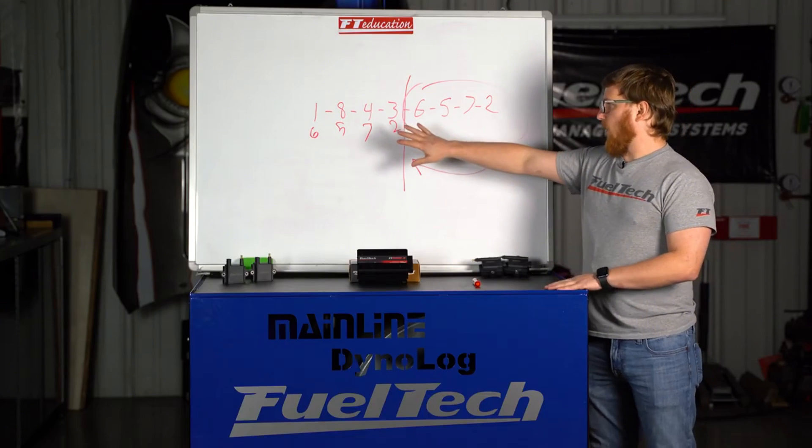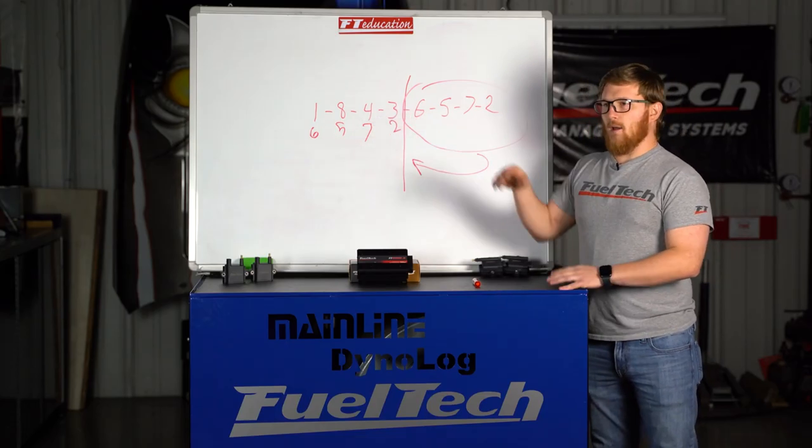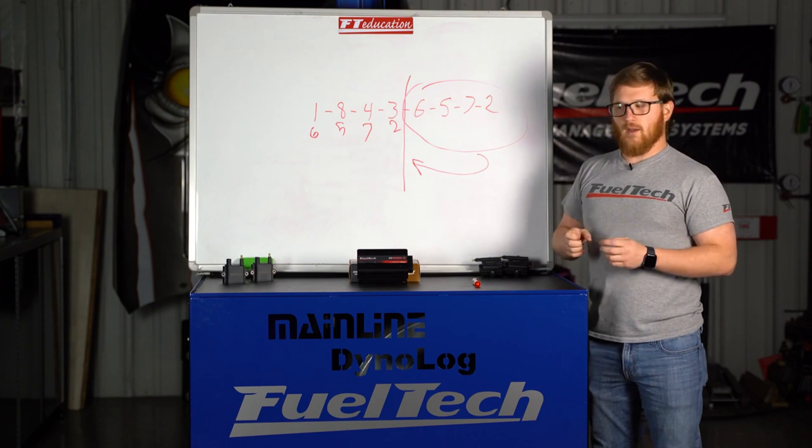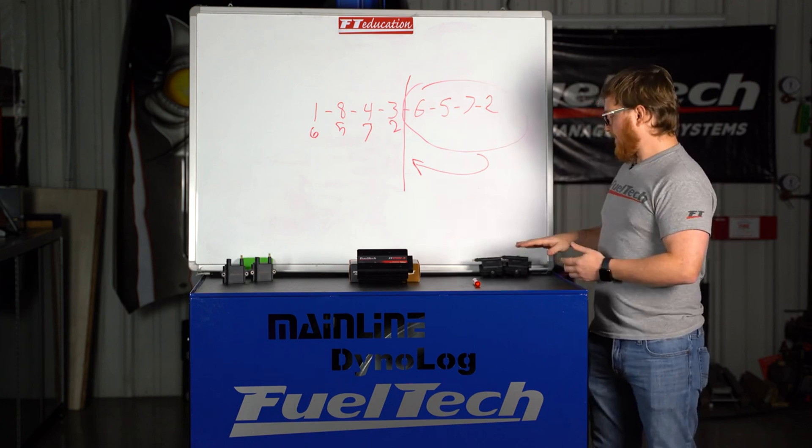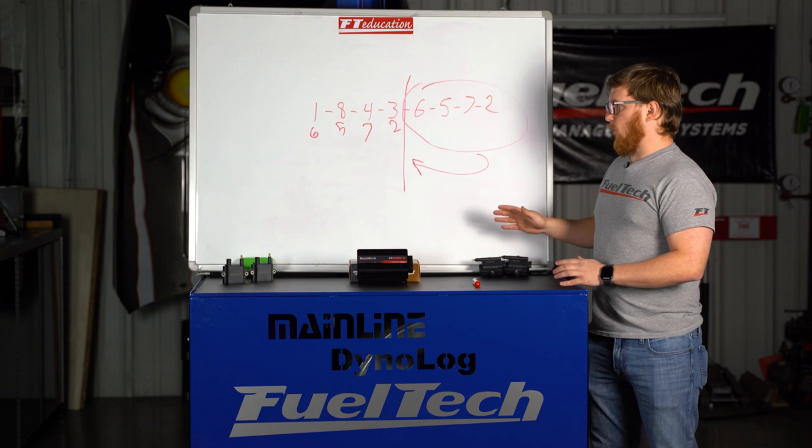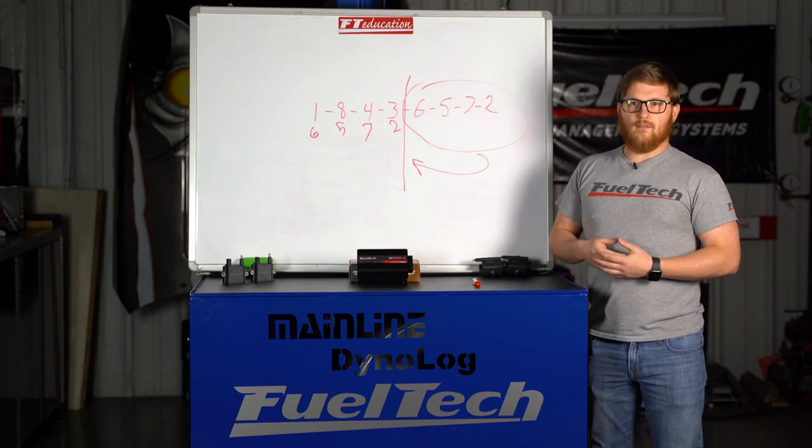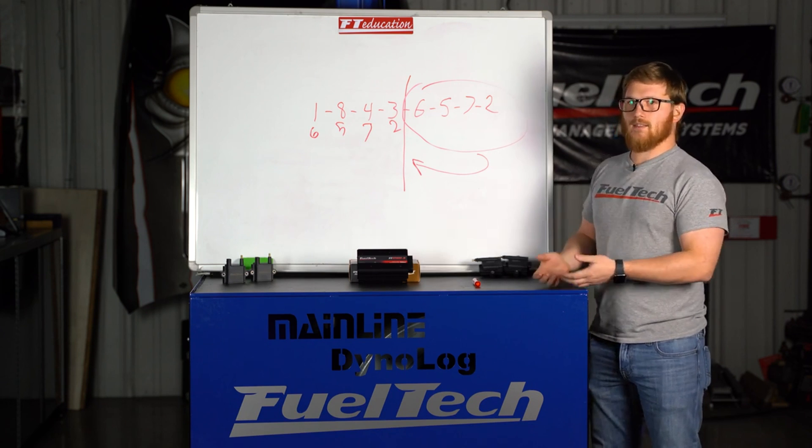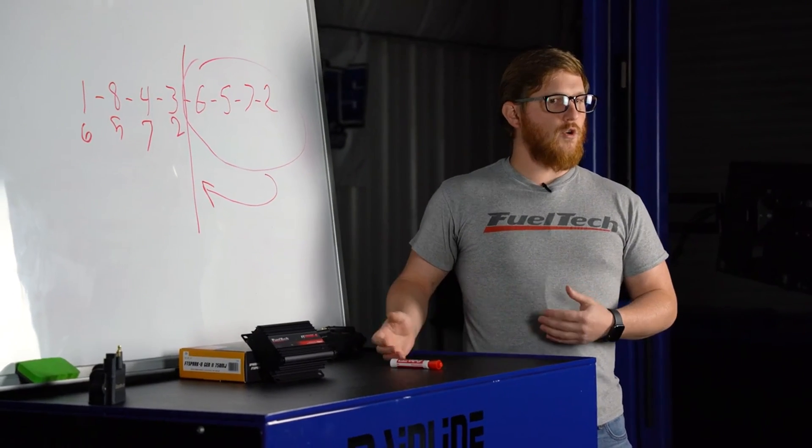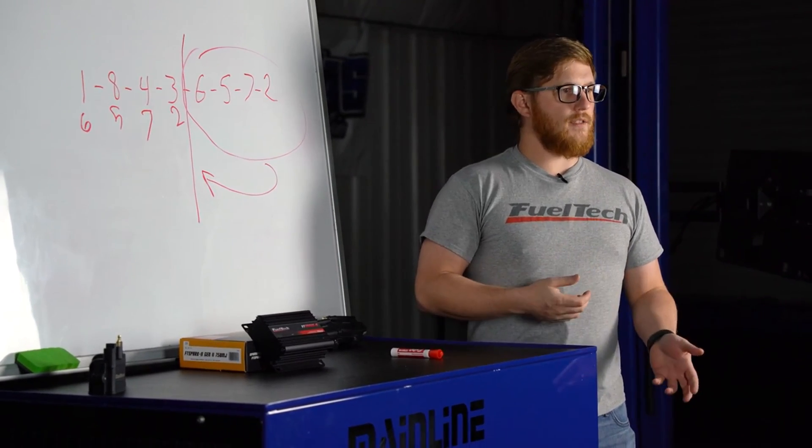Once again, like I said, you are kind of doubling the amount of RPM that the coil thinks it's doing. So for instance, if you have an eight cylinder engine and you're running 6,000 RPMs, it's going to think that it's doing double that 12,000 RPMs. So you actually have less time to charge the coil and get the most energy out of it possible.